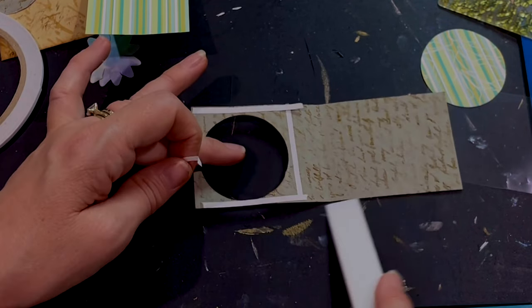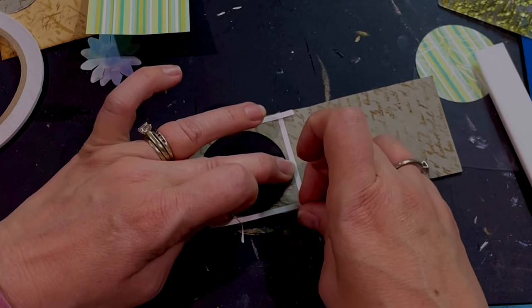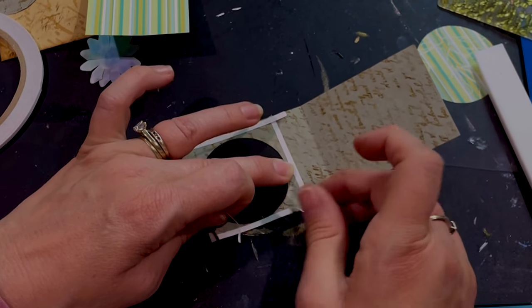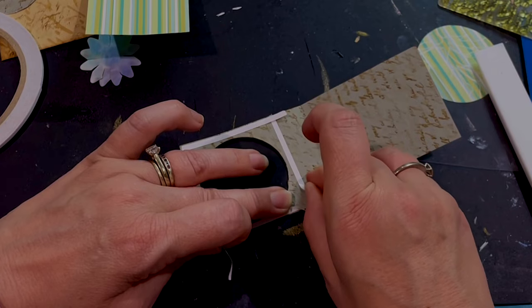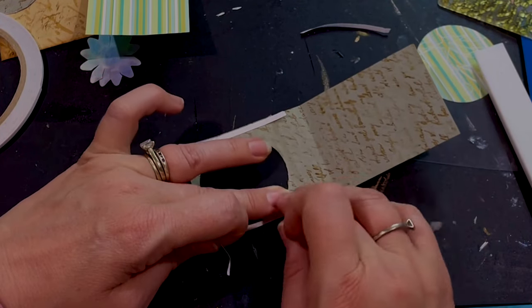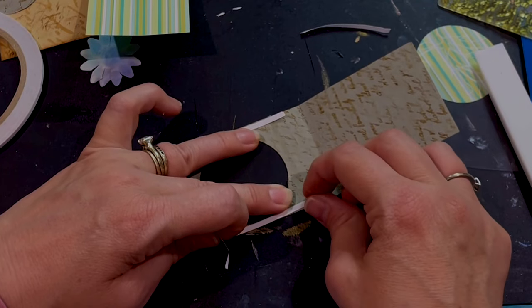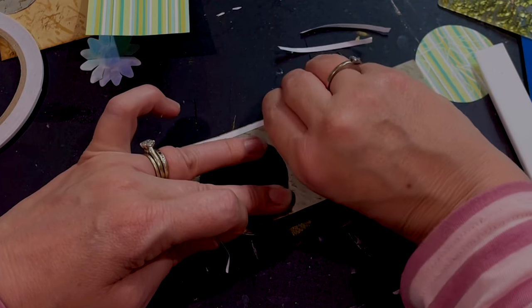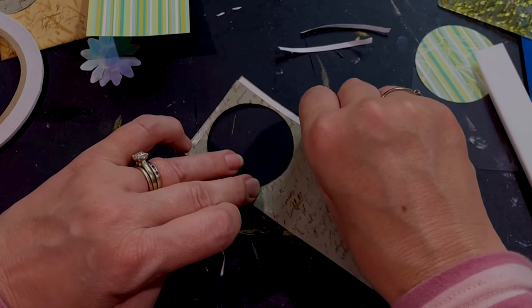You can use oftentimes when we get our clear stamps there'll be an extra piece of plastic on top and sometimes that's excess. So I often use that to cut that down. You can also use all kinds of packaging. So if there's a stiff piece of plastic you can use that.